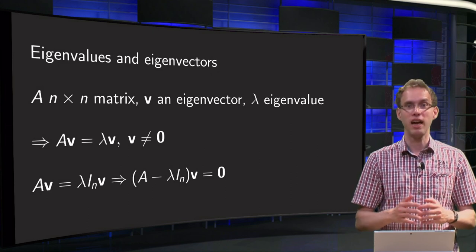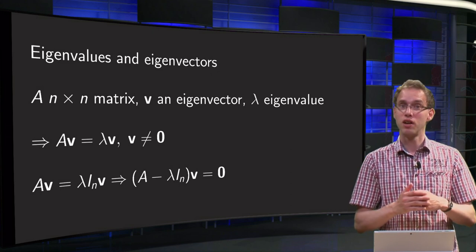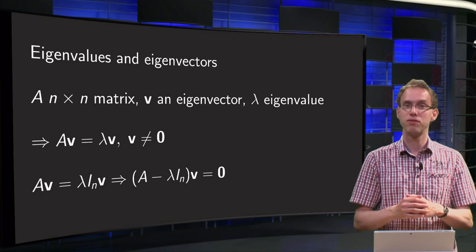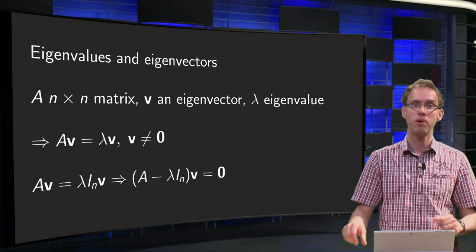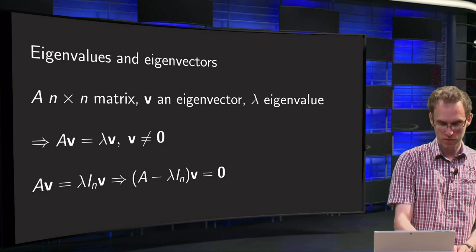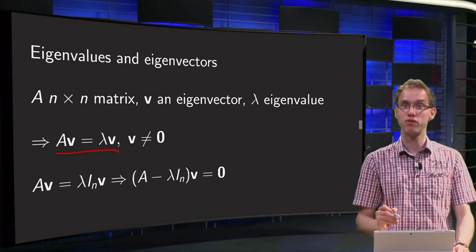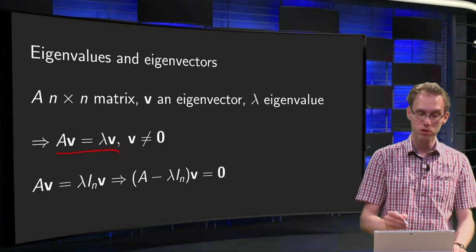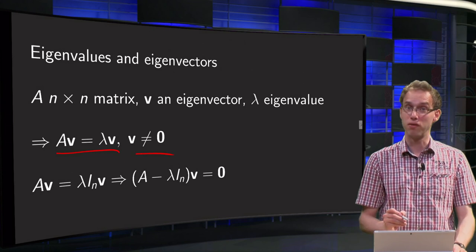So suppose A is an n by n matrix, V an eigenvector and lambda an eigenvalue. We don't know them yet, but we do know that A times V has to be equal to lambda times V, and we know that V is not a zero vector.